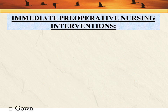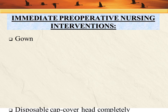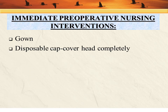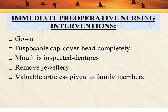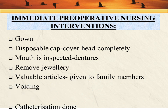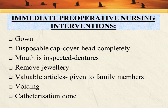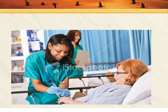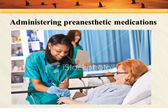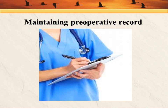Immediate preoperative nursing interventions include providing a gown to the patient, a disposable cap to cover the head completely, inspecting the mouth for dentures, removing any jewelry and valuables to be given to family members, performing voiding and catheterization, collecting baseline data, and administering pre-anesthetic medications prior to surgery according to the doctor's advice. Maintaining preoperative records includes keeping all records such as total history and all investigations done.